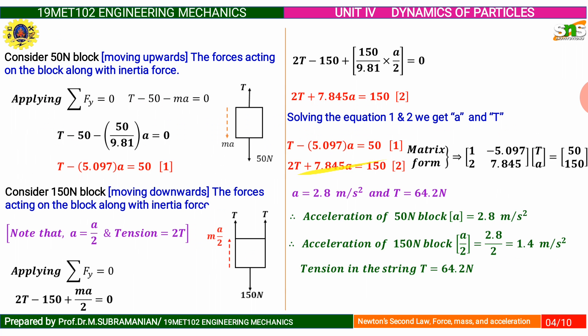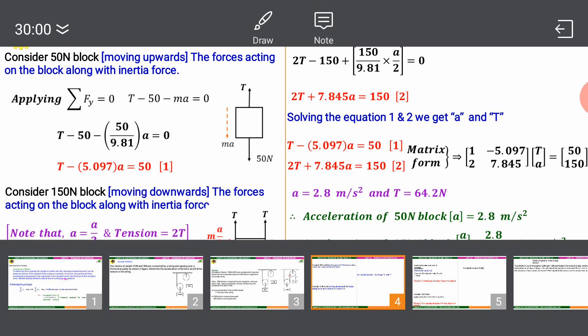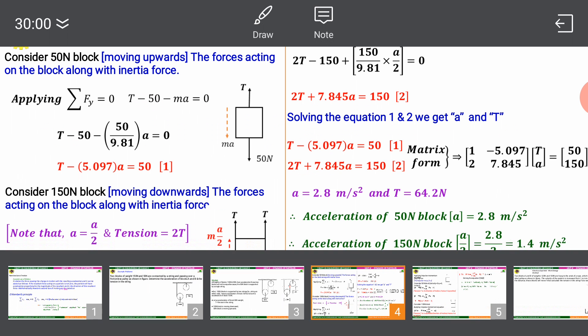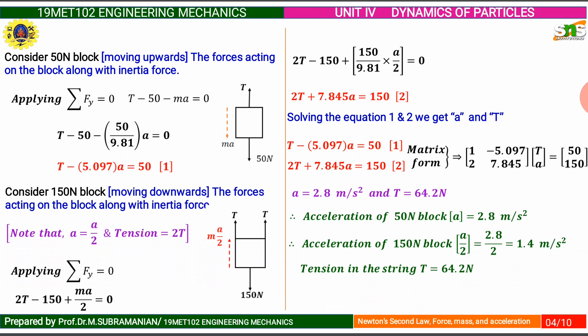Next, consider the 150 Newton block moving downwards. The forces acting on the block along with the inertia force are shown in the free body diagram. Applying dynamic equilibrium: 2T minus 150 plus mass into acceleration divided by 2 equal to zero. From the 150 Newton block we form governing Equation 2: 2T plus 7.845 into acceleration equal to 150.